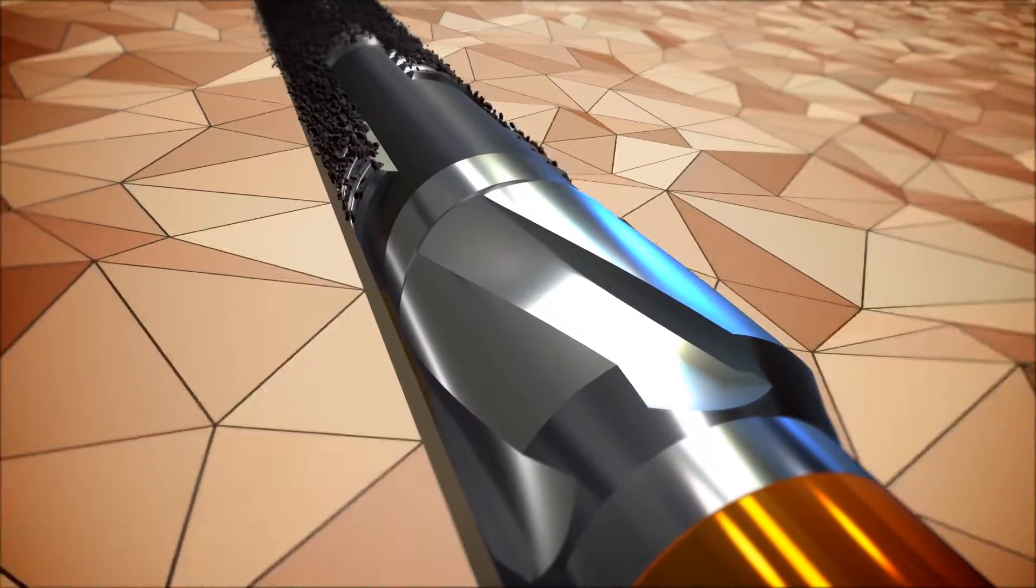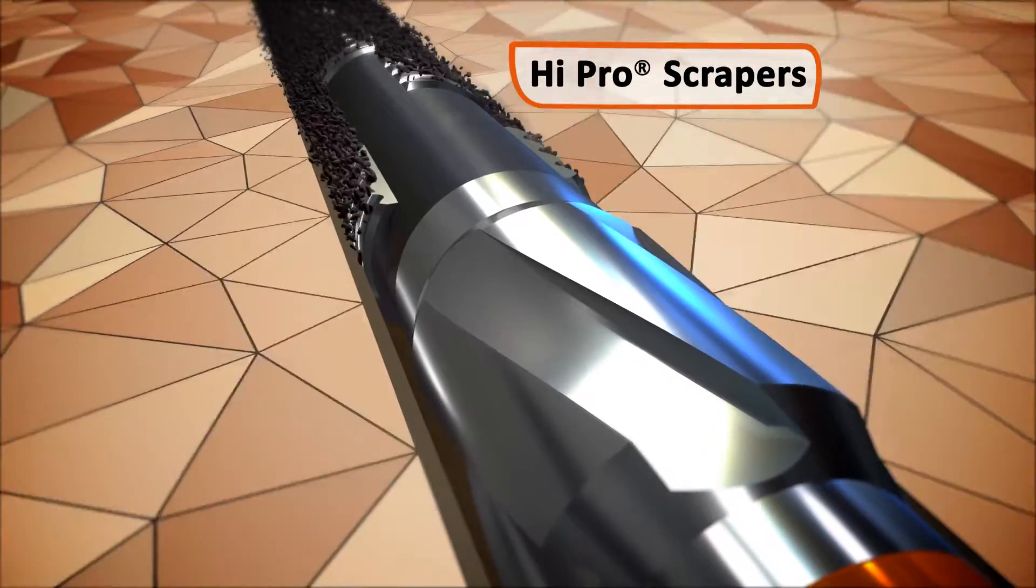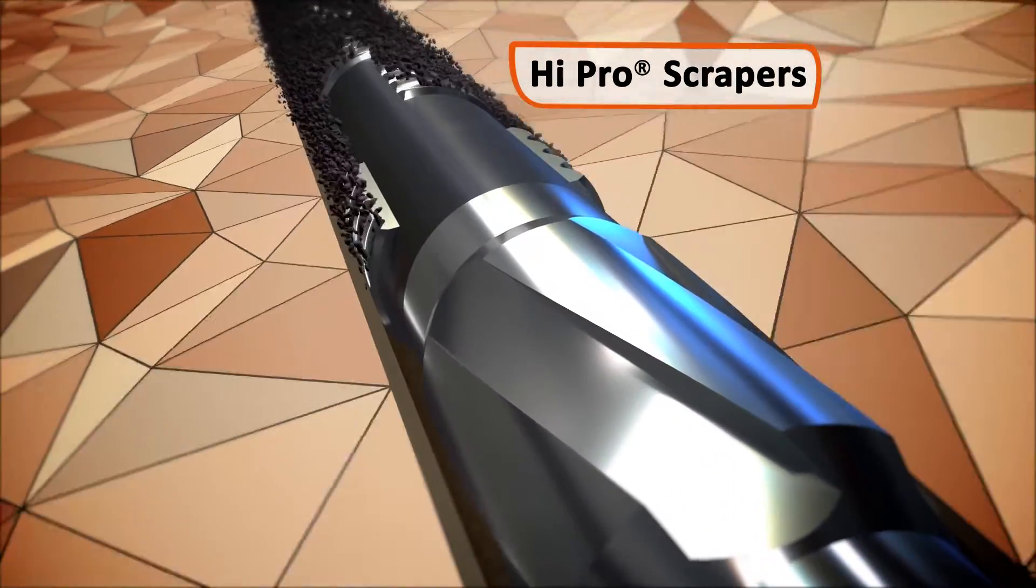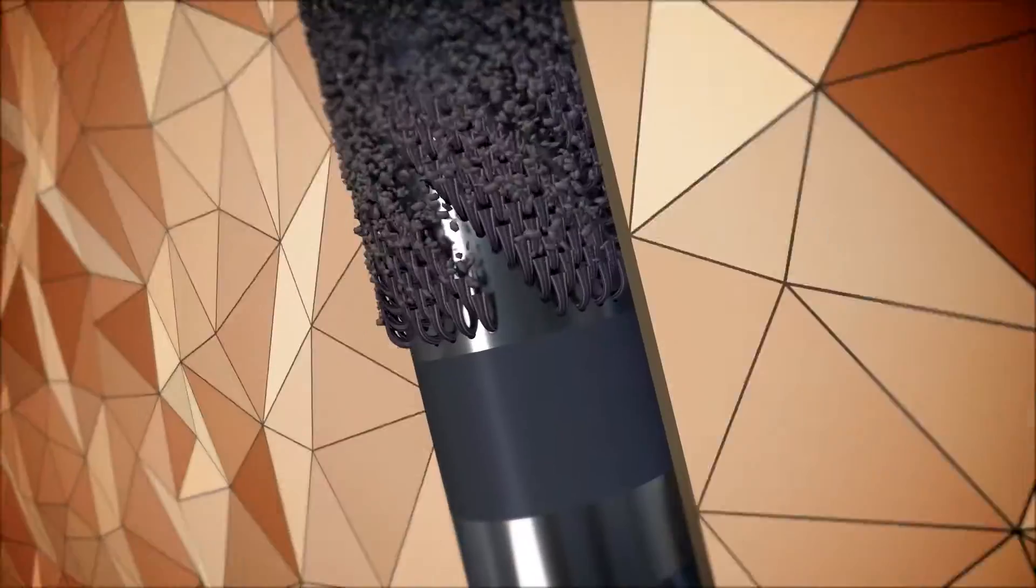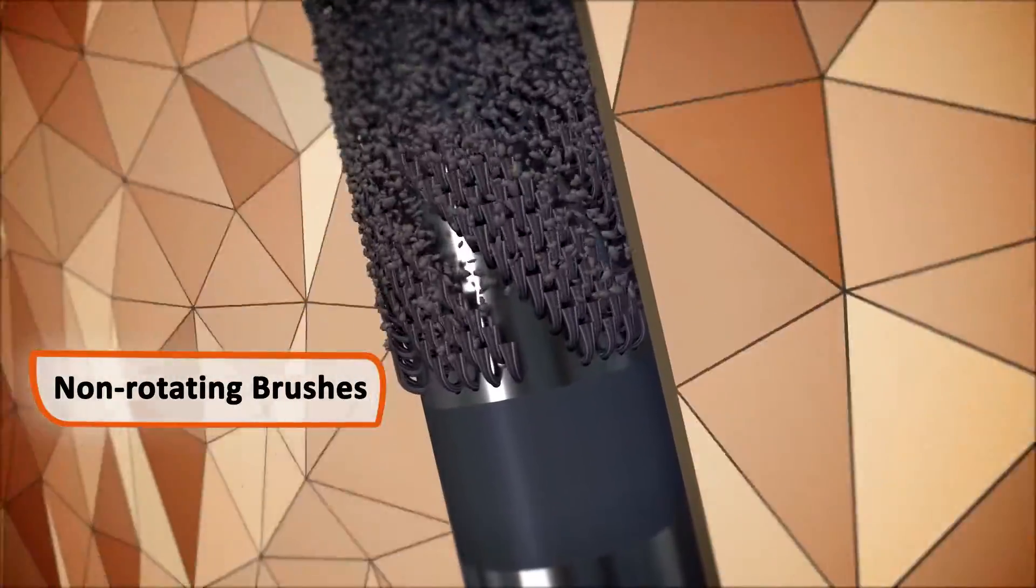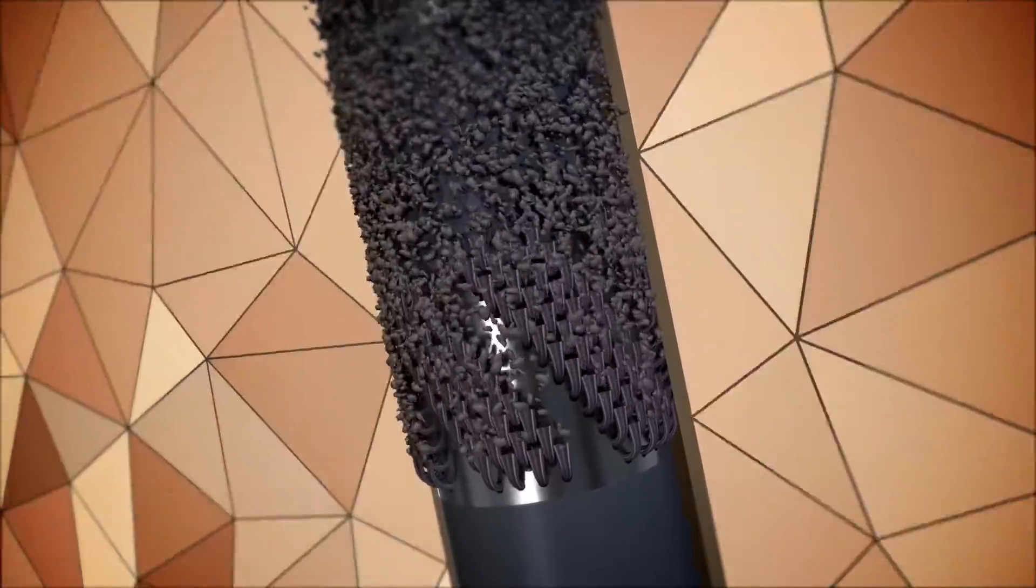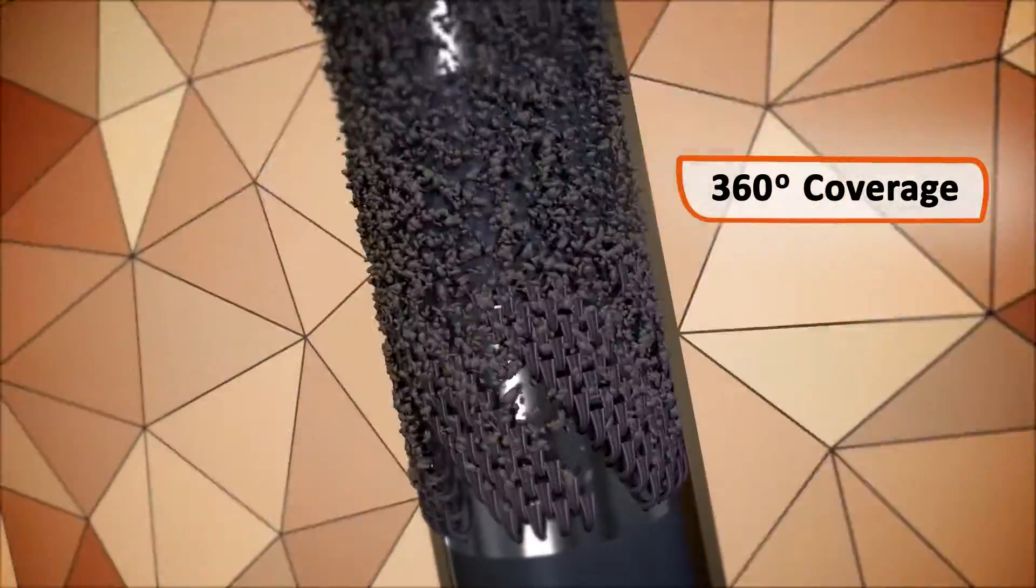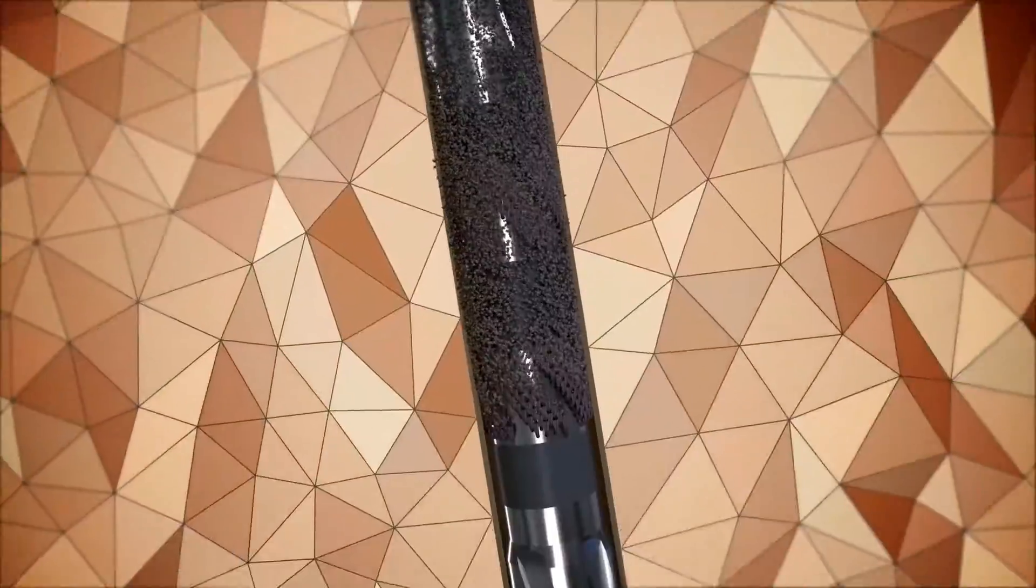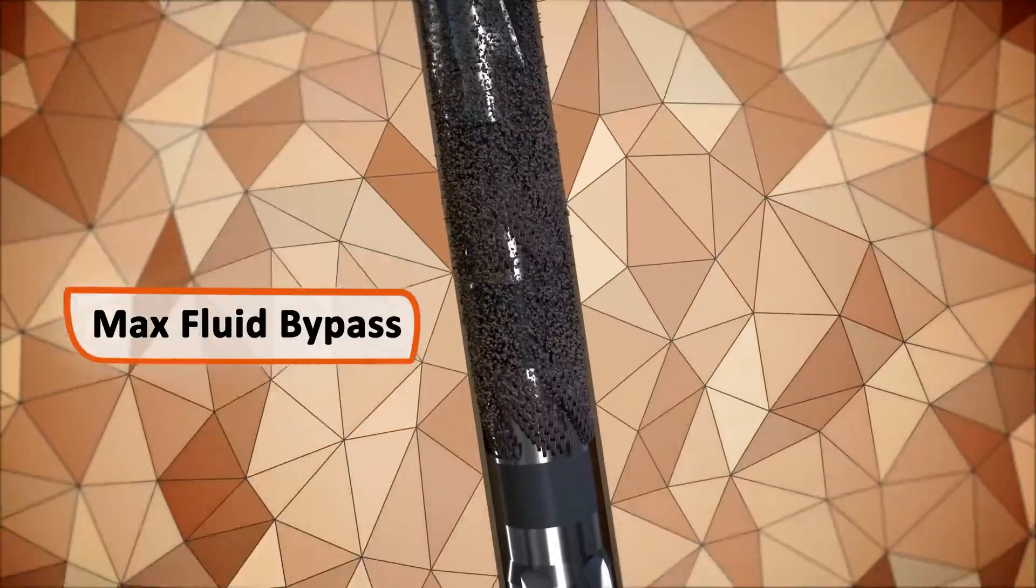As the tools are run in hole, Cortrax HiPro non-rotating scrapers and brushes efficiently remove solids build-up and scale. Offsetting the brushes and blades ensures 360-degree coverage of the casing wall while maximizing fluid bypass.